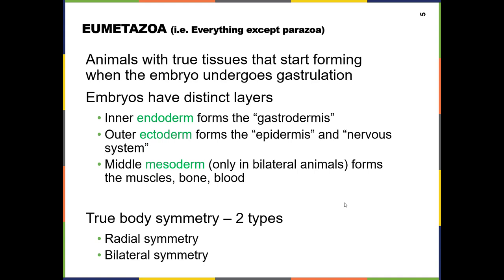The inner layer after gastrulation is called the endoderm, which eventually forms the gastrodermis — fundamentally the digestive system. The ectoderm forms the epidermis, the outer layer, the skin, and the nervous system, including neurons and brain if present. Most animals also have a middle layer called the mesoderm, which gives rise to muscles, bone, and blood. The eumetazoans have true body symmetry and have either two or three of these tissue layers. The two types of body symmetry are radial or bilateral.